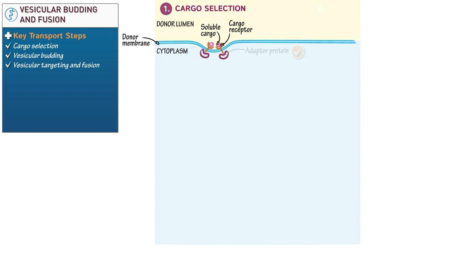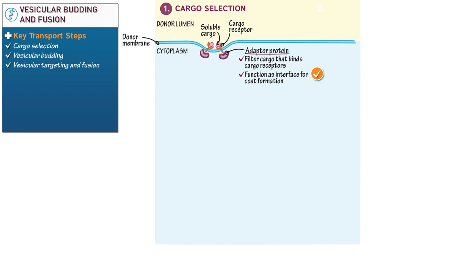Next, draw adapter proteins that bind to the cytoplasmic side of the cargo receptors. Write that adapter proteins maintain the following functions: they help filter the cargo that binds cargo receptors, and they function as an interface for coat formation, which we'll illustrate shortly. Cargo selection is highly regulated to ensure that only the correct cargo gets transported.